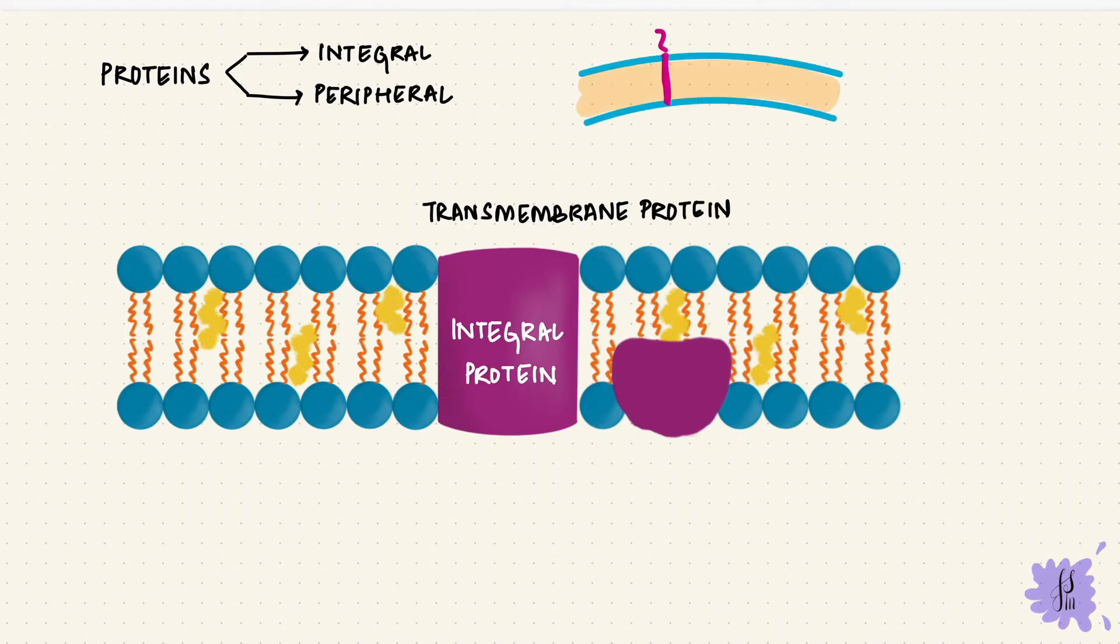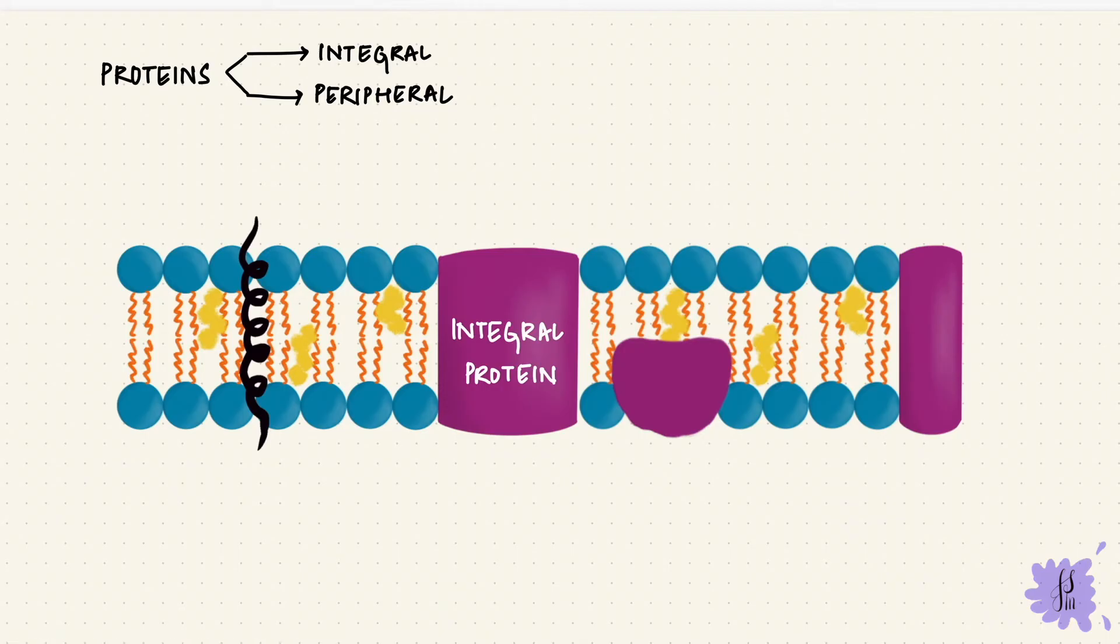It could pass through once, or it might pass through many times, like the G-protein coupled receptors, which pass through seven times. These kinds of proteins also have a hydrophobic portion in the center and hydrophilic portions towards the ends. They are embedded in the phospholipid bilayer.